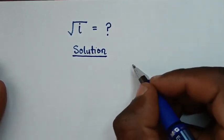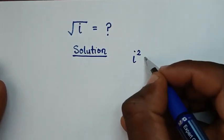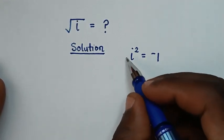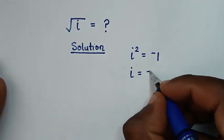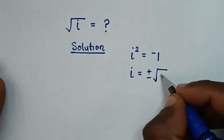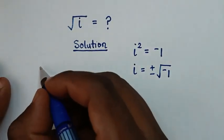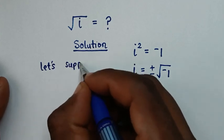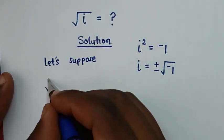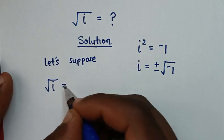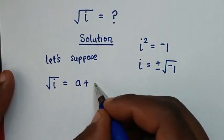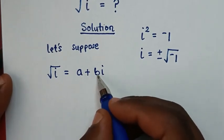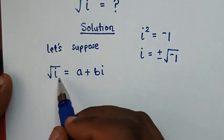In the first step, as we know that i square is equal to negative 1. So i is equal to — when we apply square root in both sides, it will be plus or minus square root of negative 1. Now, let's suppose this square root of i is equal to a plus bi. So first, we'll be finding the value of a and b, so as we can get the value of square root of i.